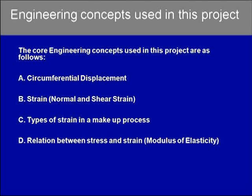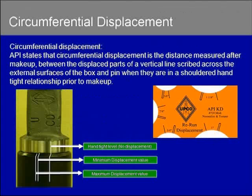These are some of the engineering concepts we used in the project, and I'm going to go through each one of them. The first is circumferential displacement — that is the API's definition of displacement. At this point we need to be aware of two terms: the minimum and the maximum displacement value. This is an illustration of our current updated displacement cards; as you can see, the minimum and maximum displacement values are marked distinctly.